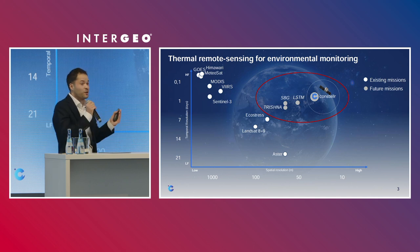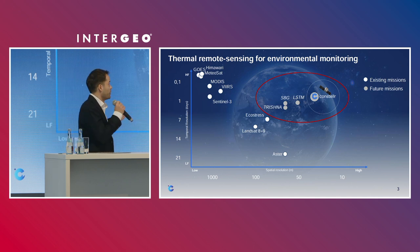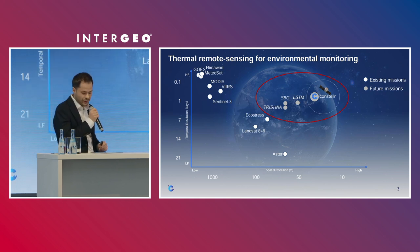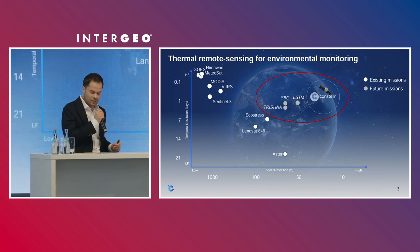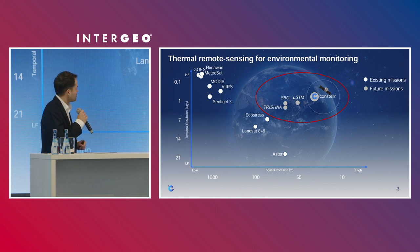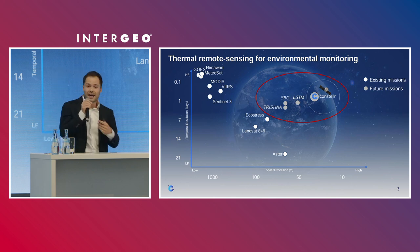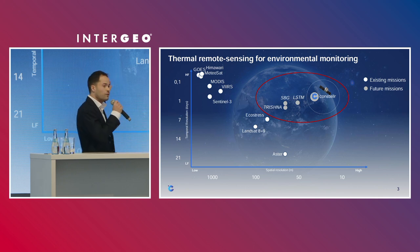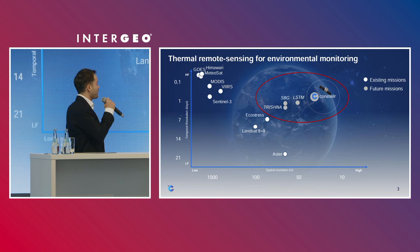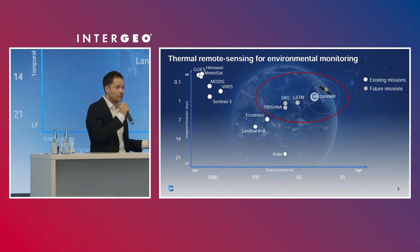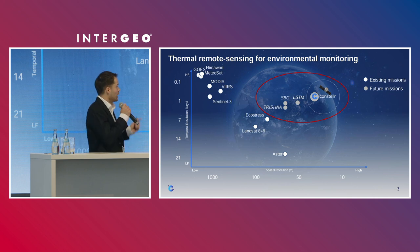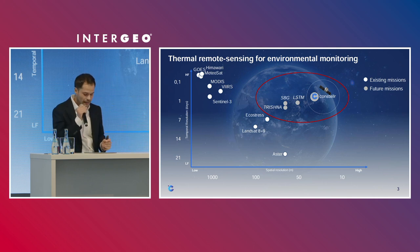There are also new missions coming — namely Trishna, the collaborative effort of the Indian Space Research Organisation and CNES, and the SBG mission from NASA. As Constellar, we are standing on the shoulders of giants and want to contribute to all of those existing missions by providing data that is of higher spatial resolution, temporal resolution, and also radiometric resolution — which refers to thermal accuracy.